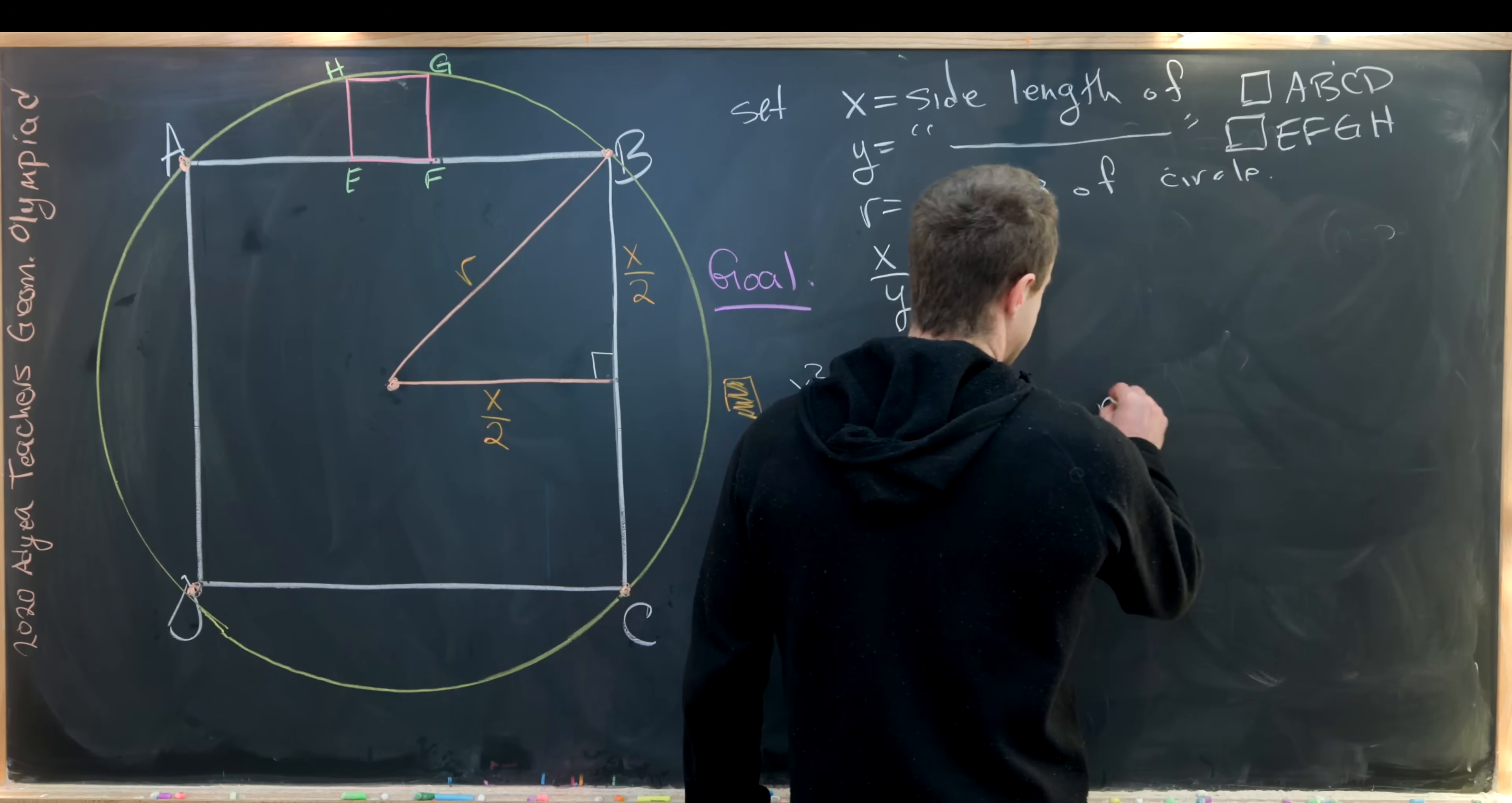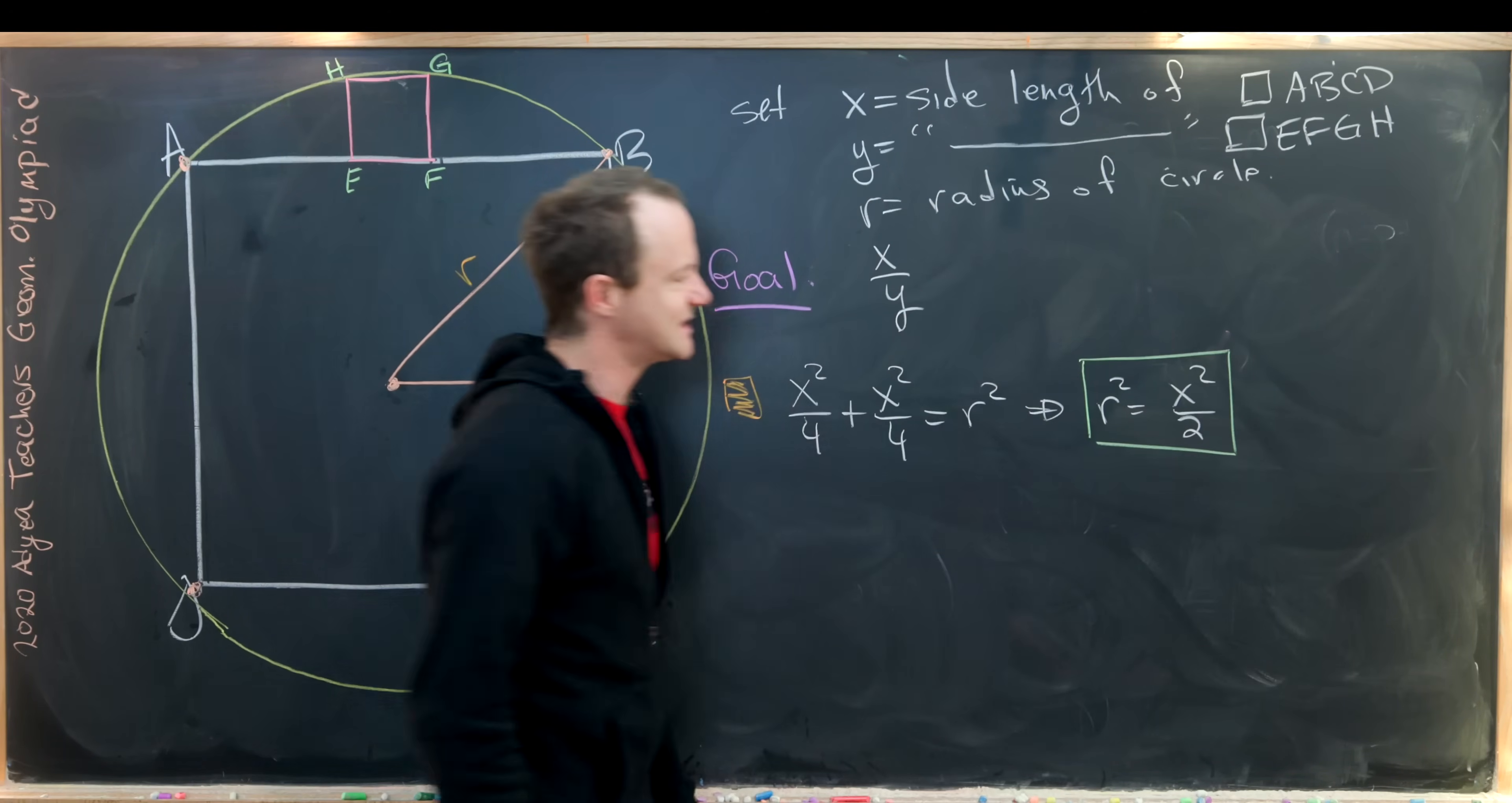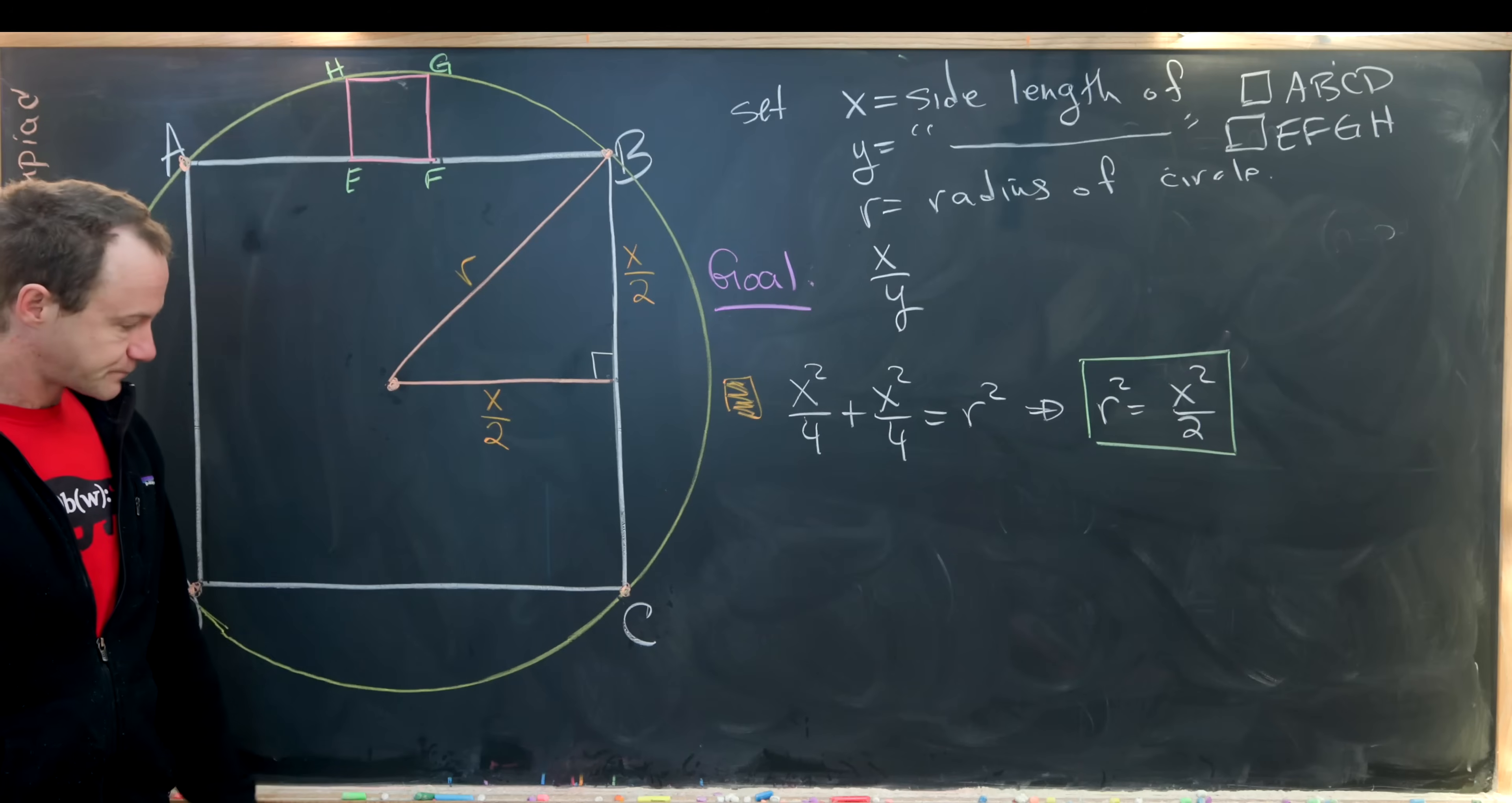That gives us R squared equals X squared over 2. Now we could solve that for R if we wanted to, but I think it's just as easy to leave it as R squared because as we'll see, R will only show up as a square.